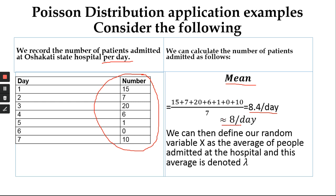Because a discrete random variable can only take exact values, we round this to approximately 8 people per day. In Poisson language, this is what we denote as Lambda — written as λ — or simply Mu in some textbooks. We define our random variable X as the average number of people admitted to the hospital, and this average is denoted Lambda or Mu.